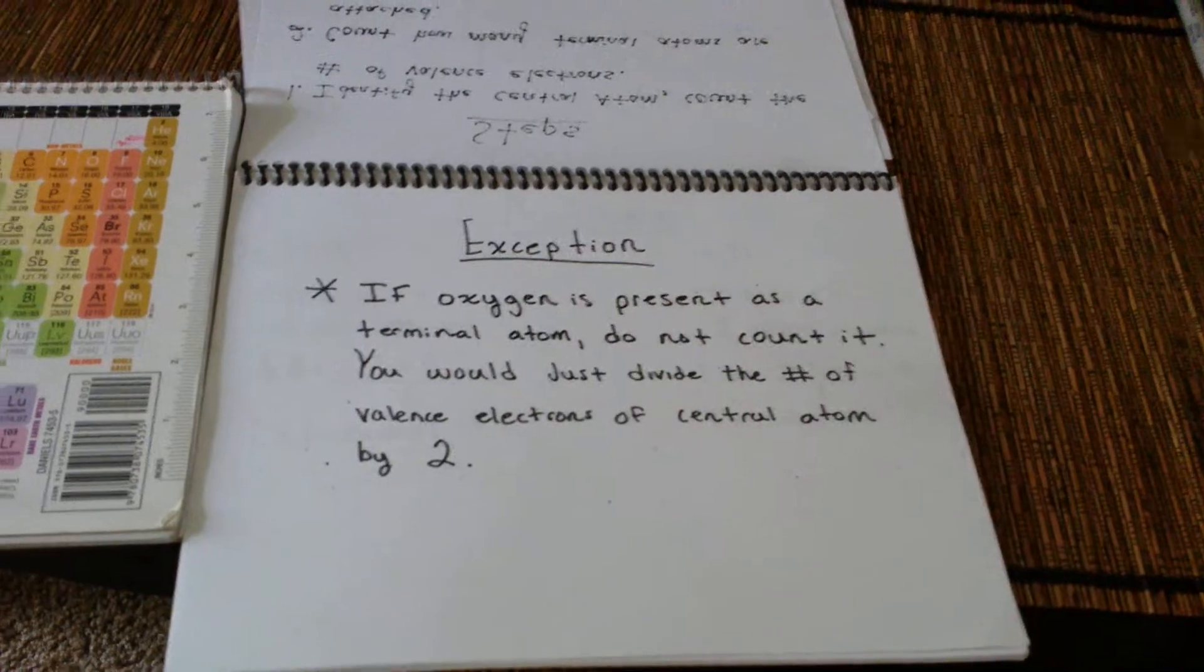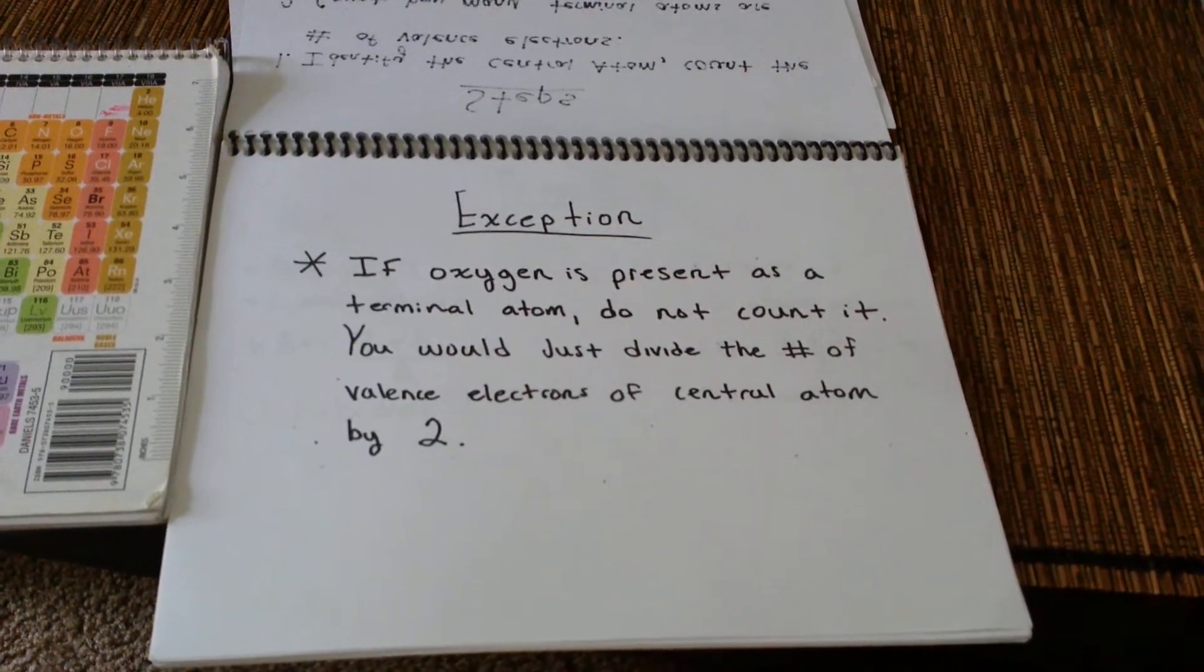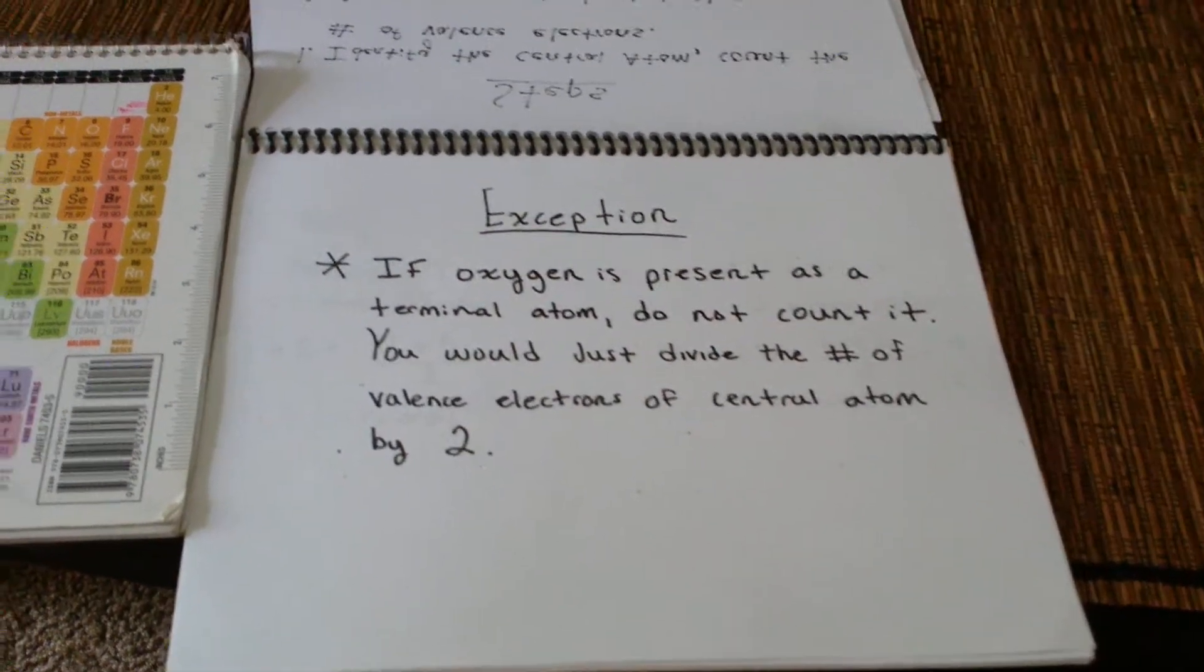There is one exception. If oxygen is present as a terminal atom, do not count it. You would just divide the number of valence electrons of the central atom by two.